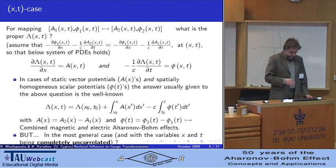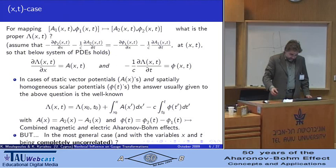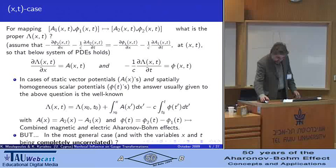What is the corresponding gauge function, which I symbolize with lambda here. This lambda must satisfy the system of partial differential equations shown in the middle. In the static case where the vector potentials do not depend on time t, and in case of spatially uniform scalar potentials, the answer is well known, is the one that is written here, and it's used in cases of combined magnetic and electric Aharonov-Bohm effects.